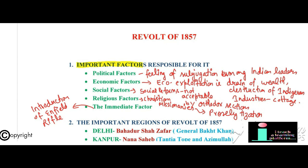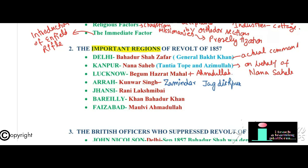Key leaders of the revolt: in Delhi, General Bakht Khan; in Kanpur, Nana Sahib with actual command held by Tatya Tope and Azimullah; in Lucknow, Begum Hazrat Mahal (Begum of Awadh), supported by Ahmadullah; in Ara, Kumar Singh, the zamindar of Jagdishpur; in Jhansi, Rani Laxmibai; in Bareilly, Khan Bahadur Khan; in Faizabad, Maulvi Ahmadullah. These brave leaders are a great example of Hindu-Muslim unity before the 1919 Non-Cooperation Movement. The revolt in Delhi was suppressed by John Nicholson in September 1857; Bahadur Shah was deported to Rangoon, where he died in 1862.